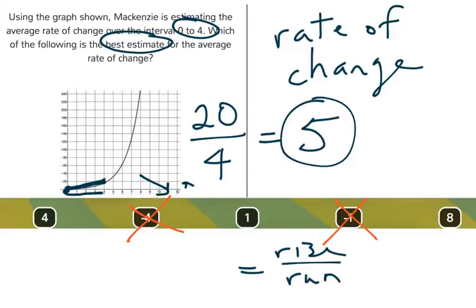And then 1 you can see is a little too low, and 8 is a little too high. So the best estimate for the average rate of change, even though it might not be perfect, is 5.